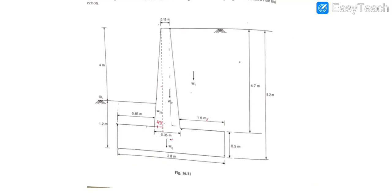So we have completed the proportioning of the retaining wall — we have determined the size of the wall, base slab, heel slab, toe slab, and foundation. Our next step is to design it in RCC — that is, determine the reinforcement required. But first, we will check stability: overturning, sliding, base pressure, and factors of safety.